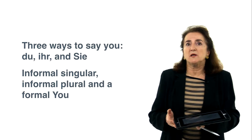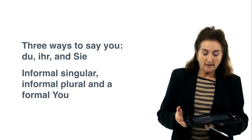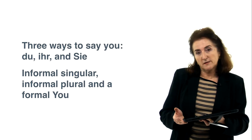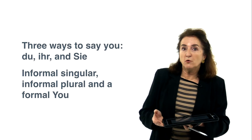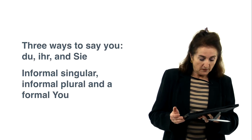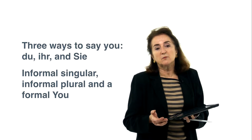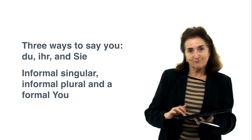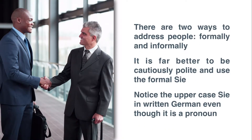There are three ways to say 'you' in German: du, ihr, and sie. The first one is the informal singular, du; then the informal plural, 'you guys,' ihr; and a formal you, which is sie. If you address someone in writing formally, you capitalize the S. It is far better to be cautiously polite and use the formal Sie, and wait for the older person or person in authority to offer the informal du. Notice the uppercase Sie, which is capitalized in written German even though it is a pronoun.